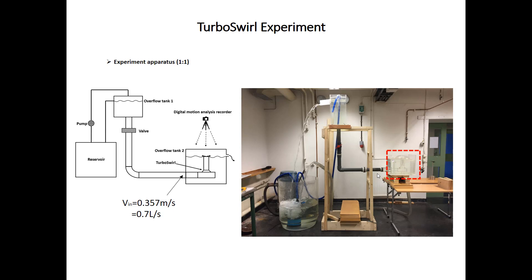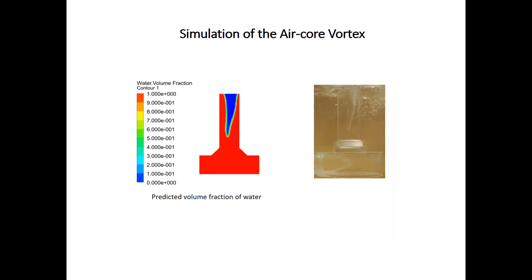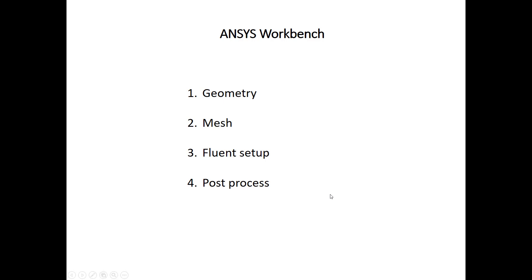We want to use numerical simulation to simulate this air vortex. We already have some results — here is the water volume fraction, and we can clearly see that an air vortex was formed in the numerical results, agreeing very well with the experimental results. In this video tutorial, we will go through these procedures one by one: first, the geometry of the fluid domain; then we generate a mesh; then we do the fluid setup; and finally we have some post-processing.